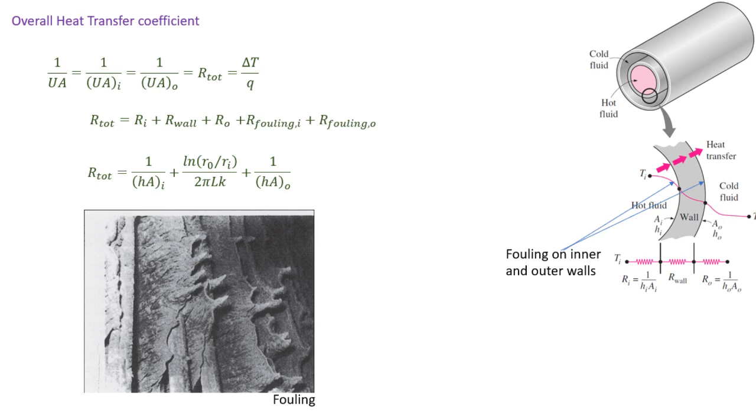They often happen because of precipitation deposits like calcium from the fluid, but they may also happen due to corrosion or biological growth. We often express those fouling factors for a surface area and the units will be meters squared Kelvin per watt.